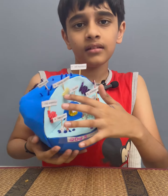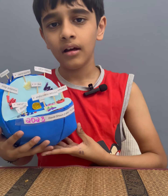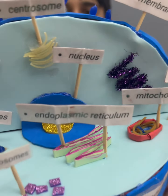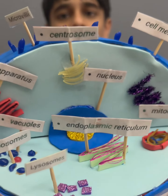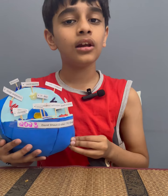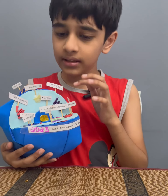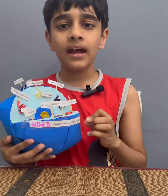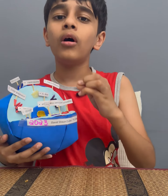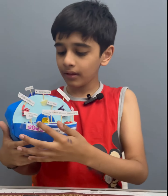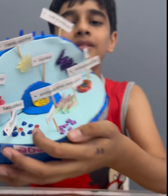This is the centrioles. It plays a part in the cell by organizing microtubules that serve as the cell's skeletal system. It also helps determine and locate where the nucleus is, and it also helps to locate all the organelles within the cell.